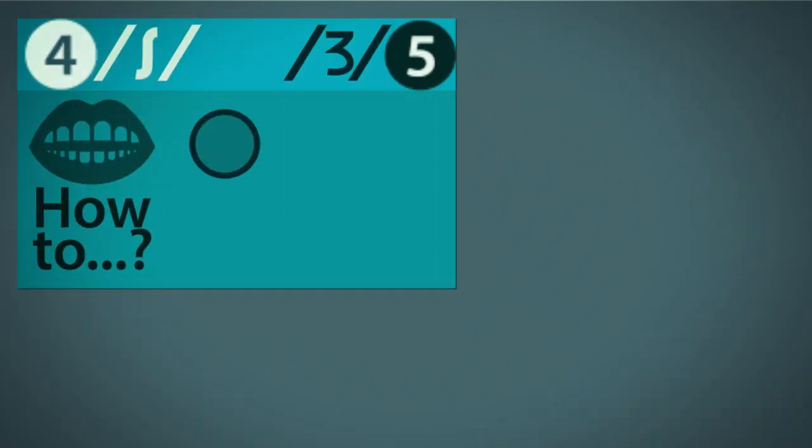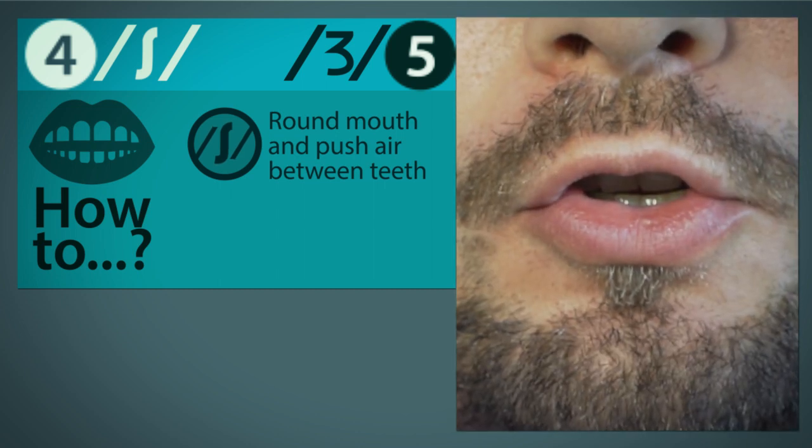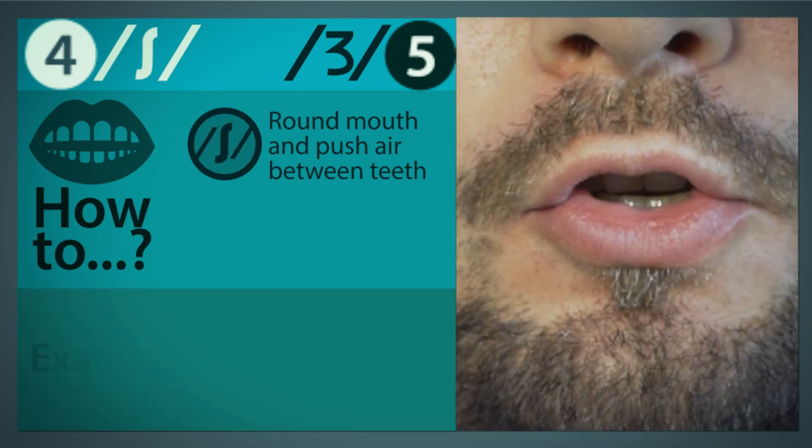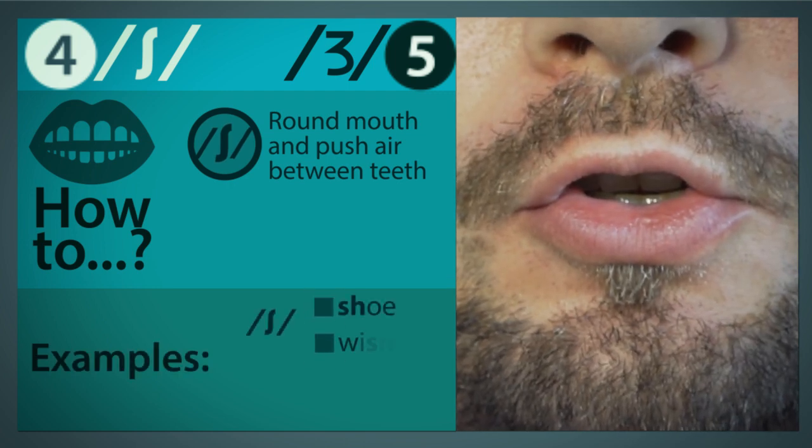To make the SH phoneme, you round your mouth and push air between your teeth. It's like you're telling someone to be quiet. We see this sound in many words such as shoe and wish.